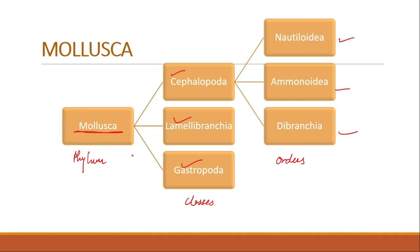The phylum Mollusca is made up of the word 'molluscum' which means soft-bodied. It includes soft-bodied, triploblastic, unsegmented, and coelomate invertebrate animals. They are mostly marine; few are freshwater, brackish water, and land forms. They are bottom dwellers and vagrant; a few of them burrow in sand or mud.